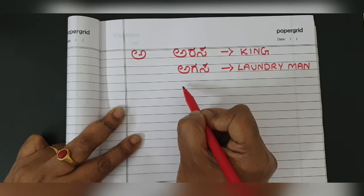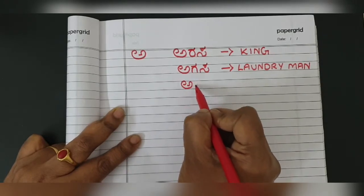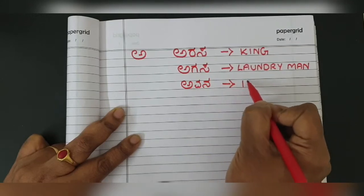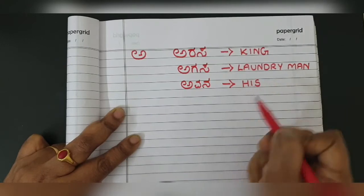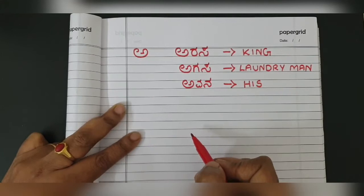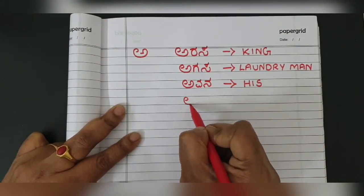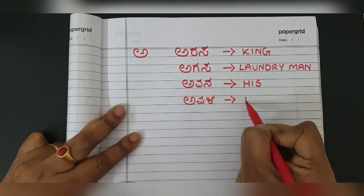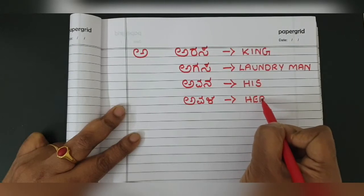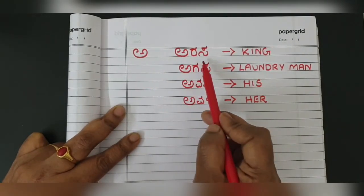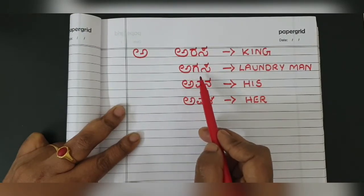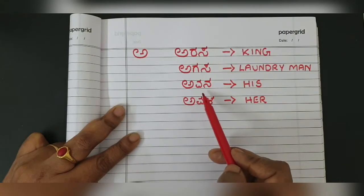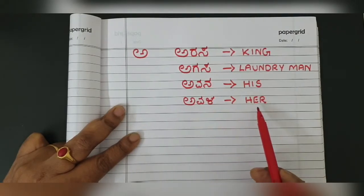We will learn one more word: 'avana' — A-V-A-N-A. Avana means 'his.' We'll also learn 'avala' from A — A-V-A-L-A. Avala means 'her.' So 'avana pennu' means his pen, and 'avala' means her pen or her book. So from the letter A: arasa (king), agasa (laundryman), avana (his), avala (her).